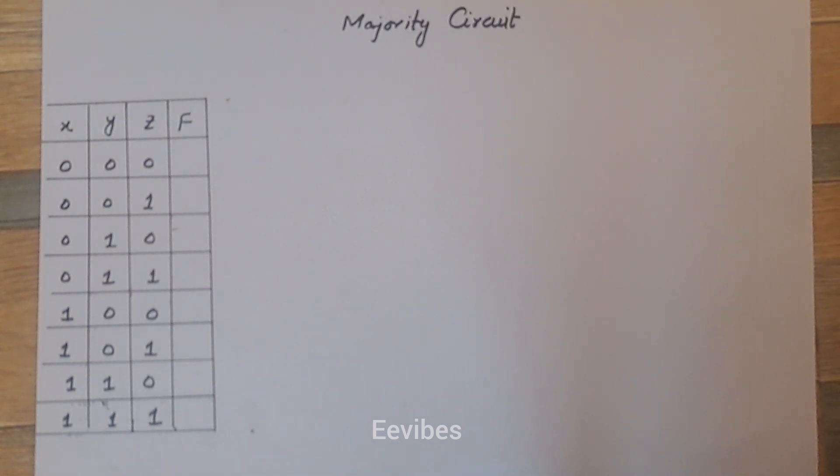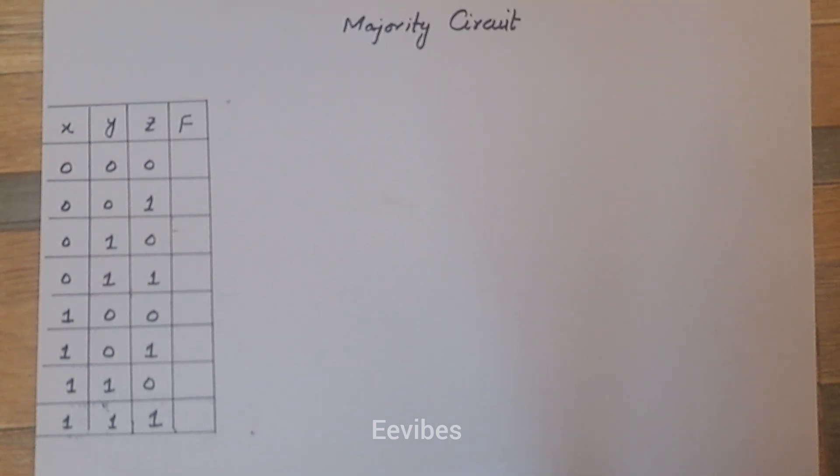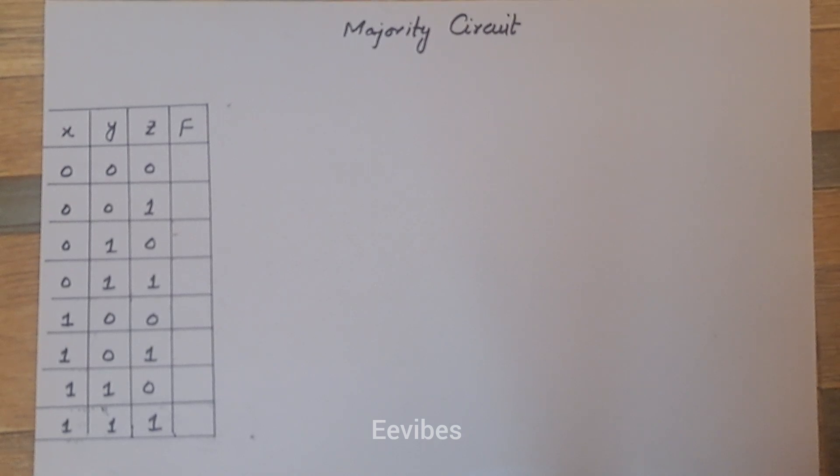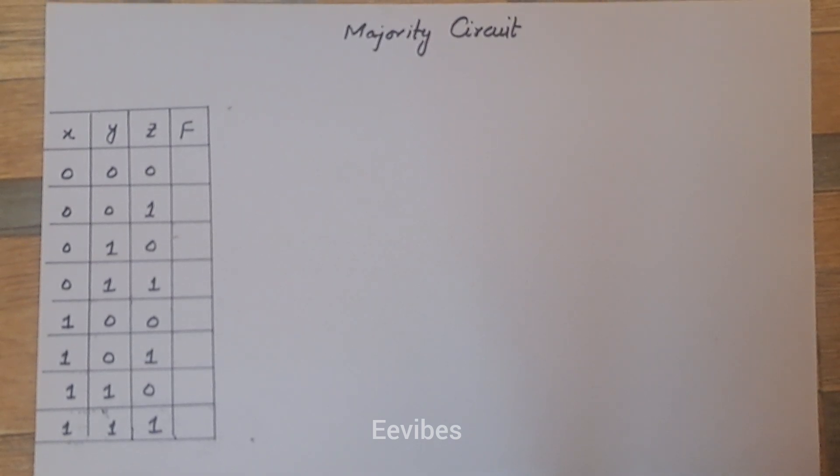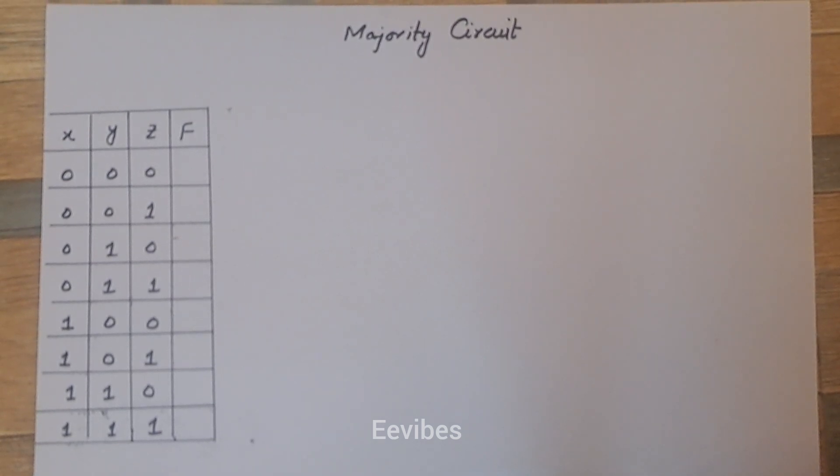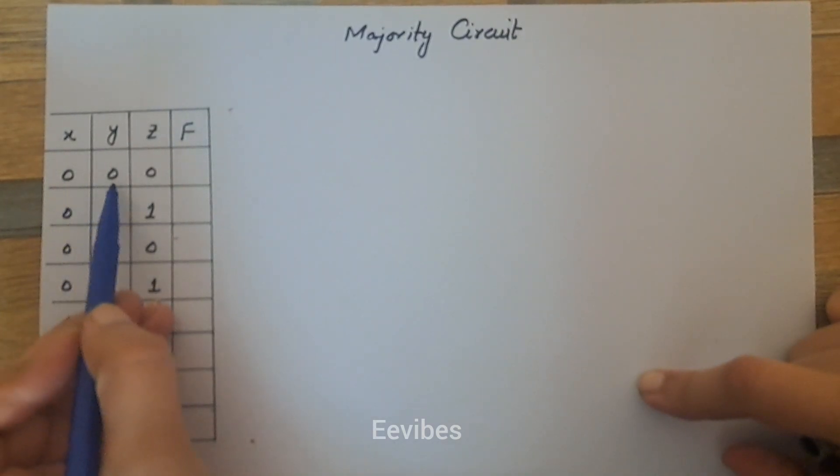Hi everyone, this is Asma Mushtaq from Eevibes, and in this tutorial I am going to solve the end problem 4.6 from digital logic design, where you have to design a three-input majority circuit and the output function f will be equal to one when the binary combination has more number of ones as compared to zeros.